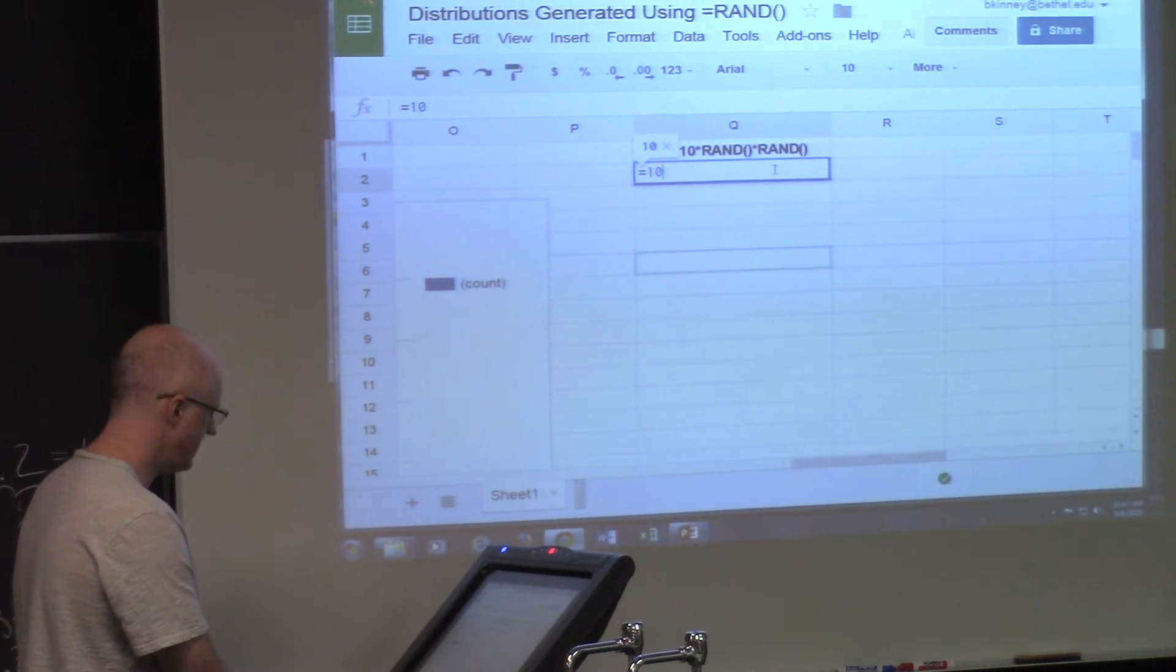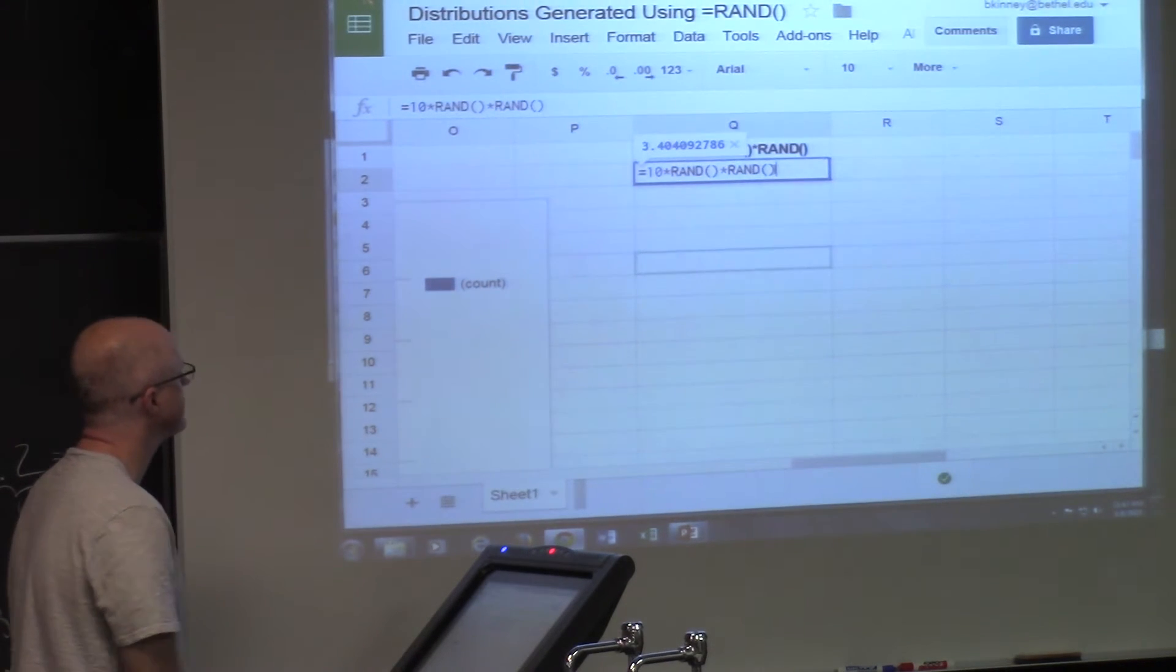So here's how you type it. Equals ten times RAND, parenthesis, parenthesis, times RAND again, parenthesis, parenthesis.